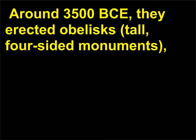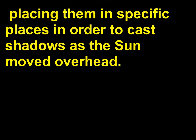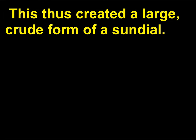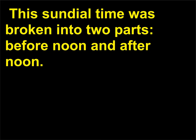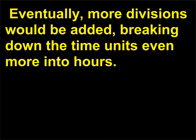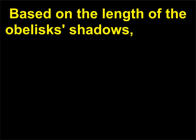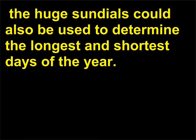Around 3500 BCE, the Egyptians erected obelisks — tall, four-sided monuments — placing them in specific places to cast shadows as the sun moved overhead, creating a large, crude form of sundial. This sundial time was broken into two parts: before noon and after noon. Eventually more divisions were added, breaking down the time units even more into hours based on the length of the obelisks' shadows. The huge sundials could also be used to determine the longest and shortest days of the year.